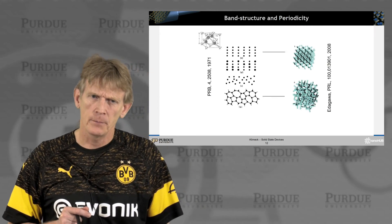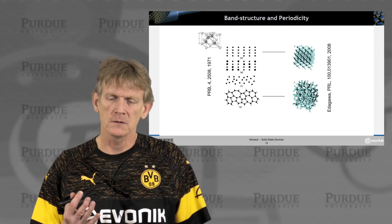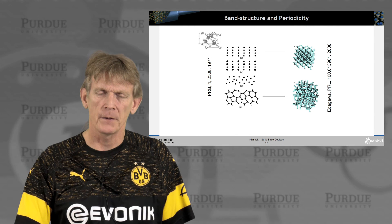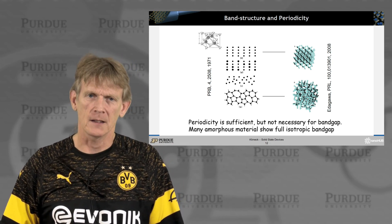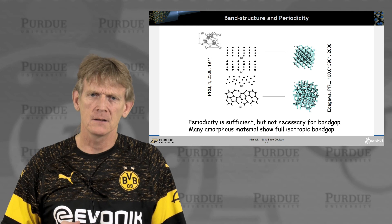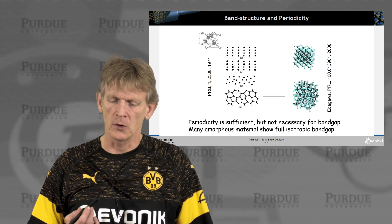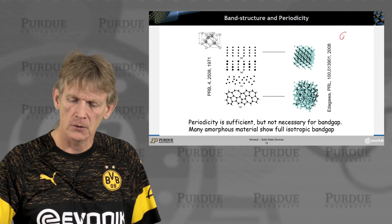So the point of showing this is also that you don't necessarily have to have complete periodicity. So periodicity in a semiconductor is sufficient to get you a bandgap. But it is not necessary. So here are some other examples of amorphous materials that show a full bandgap.